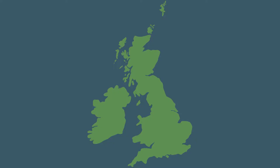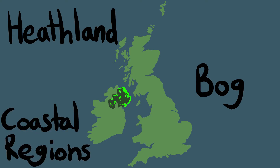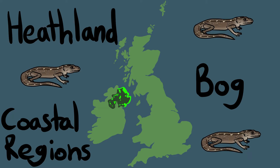Meanwhile, over in Northern Ireland, habitats like heathlands, bogs and coastal regions are being threatened with conversion to agricultural and urban sites. Common lizards are often associated with these habitats, and so the remaining Northern Ireland populations are predicted to be small, isolated and surviving in highly fragmented habitats.